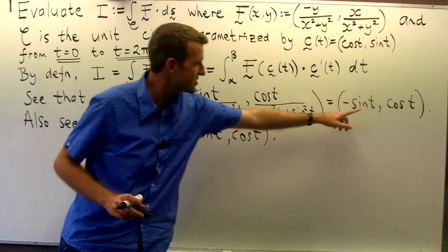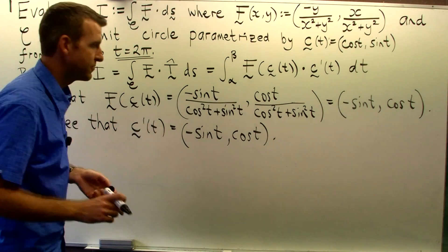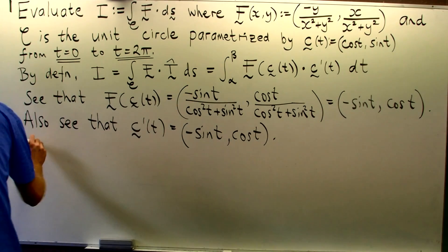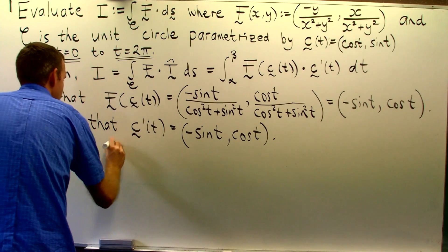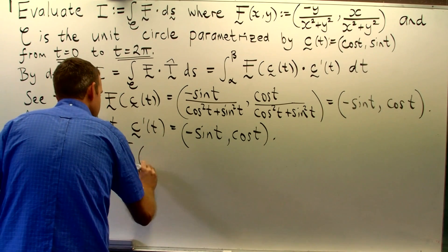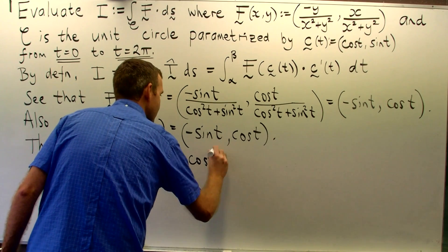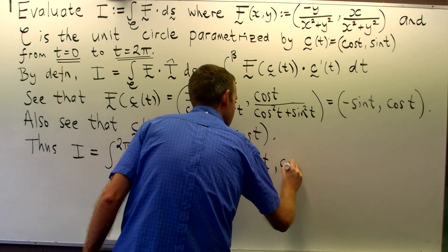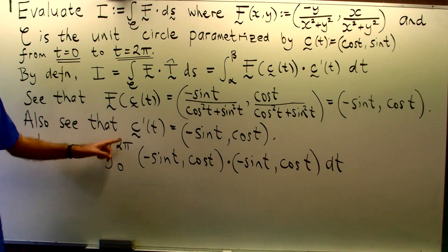So all we need to do now is take the dot product of this and this and integrate from 0 to 2 pi with respect to t. So it is the dot product of these two vector functions integrated from 0 to 2 pi.